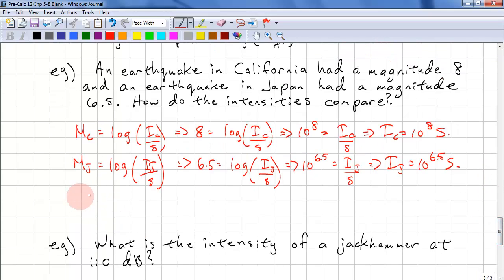So how do we compare them? Intensities, we simply do IC over IJ. So this is 10 to the power of 8 times S over 10 to the power of 6.5 S. We can cancel out the S's, and this is approximately 31.6 times more intense. That is, the California earthquake is 31.6 times more intense than the Japanese earthquake.